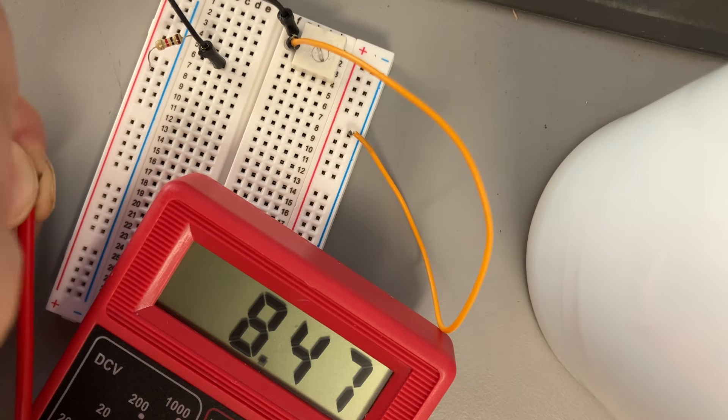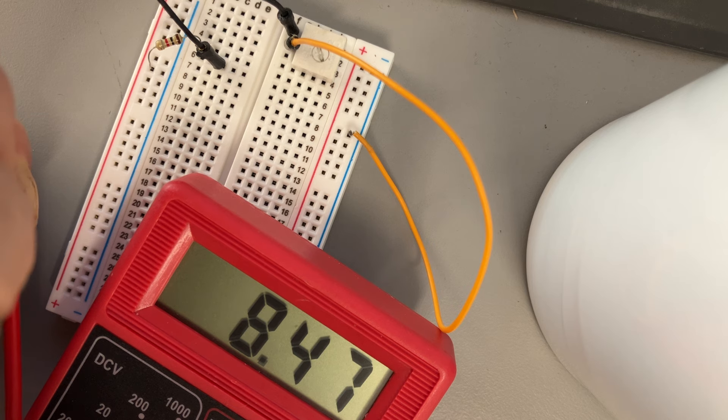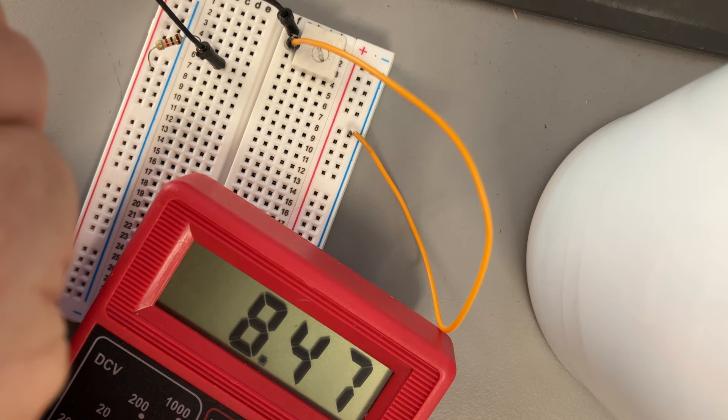Then I'll do the same thing for the negative here. And when I do that, I get a total reading of 8.47. So my battery pack can give me 8.47 volts. It would max out at like 9. These are kind of dead batteries, but they'll work okay.